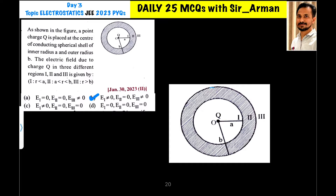As shown in the figure, a point charge q is placed at the center of a conducting spherical shell of inner radius a and outer radius b. We need to find the electric field due to charge q in three different regions: one, two, and three.